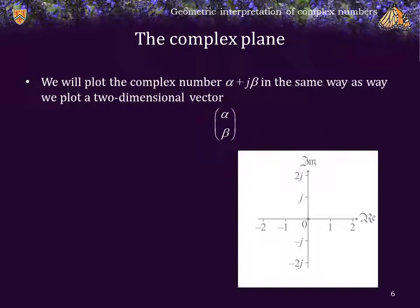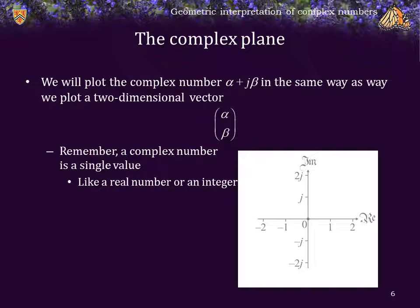Well, we're going to plot or represent or interpret the complex number alpha plus j beta in the exact same way that we represent a two-dimensional vector alpha beta. So, again, remember, a complex number is a single value. It's a value like a real number or an integer. It doesn't have two separate parts. It is, in fact, one value that happens to have a real component, which may or may not be 0, and an imaginary component that also may or may not be 0. It is not like a two-dimensional vector, which is more like one real number and then a second real number.